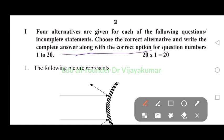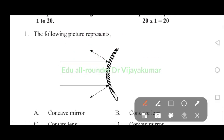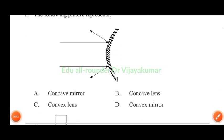For question numbers 1 to 20, each carries one mark. The following picture represents: concave mirror, concave lens, convex lens, or convex mirror. It represents convex mirror. Answer is D.